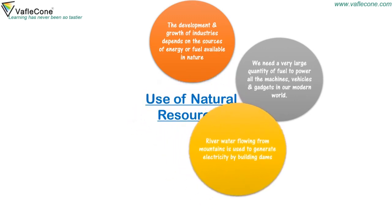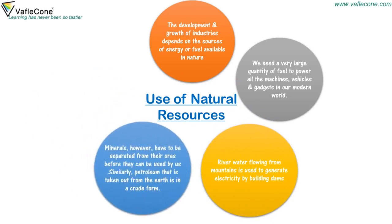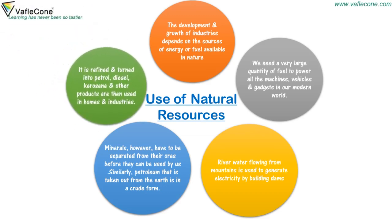River water flowing from mountains is used to generate electricity by building dams. Minerals have to be separated from their ores before they can be used by us. Similarly, petroleum that is taken out from the earth is in a crude form. It is refined and turned into petrol, diesel, kerosene and other products that are then used in homes and industries.